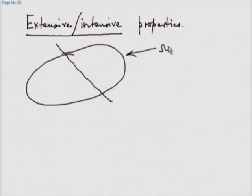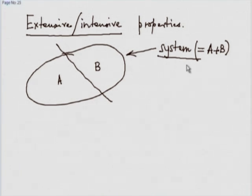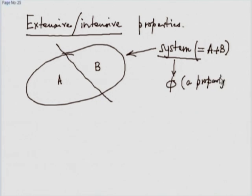This is our system, and let us say it is partitioned into two parts or two subsystems A and B. A and B together form our system, so we can say the system is A plus B. Let us consider some property of the system and call it phi. We measure that property and let us say it is phi.